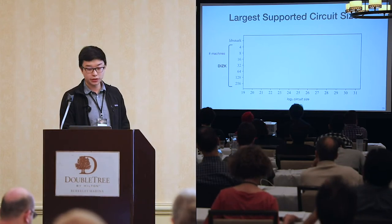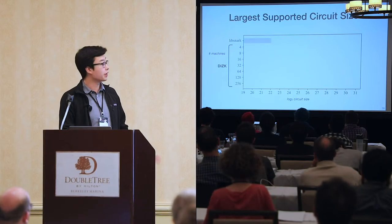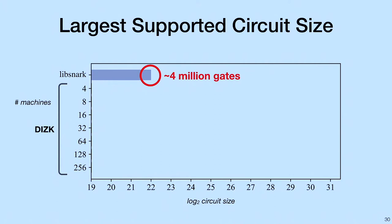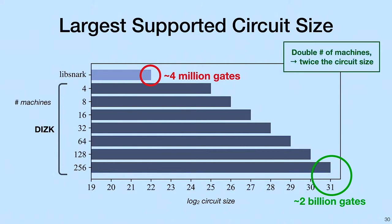First, we evaluated our system for the largest supported circuit size. When we profiled LibSnark in our environment, we found that it reached approximately 4 million gates. When we profiled DIZK across different numbers of executors, we found that we were able to reach approximately 2 billion gates with 256 machines. The pattern that we saw was that as we doubled the number of machines, we were able to support twice the circuit size. This led us to ask, could we compute up to these large circuit sizes in a time-efficient manner?